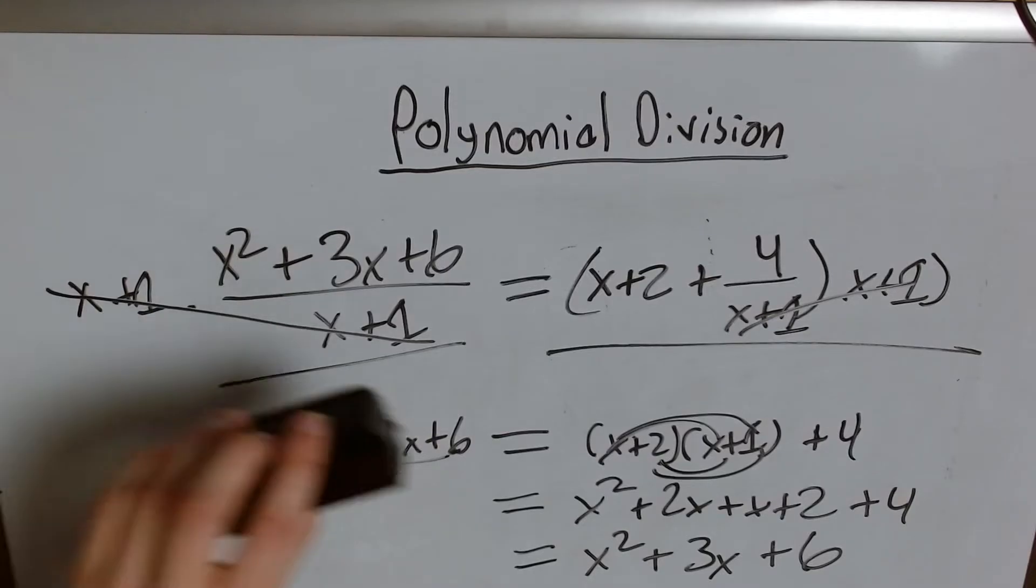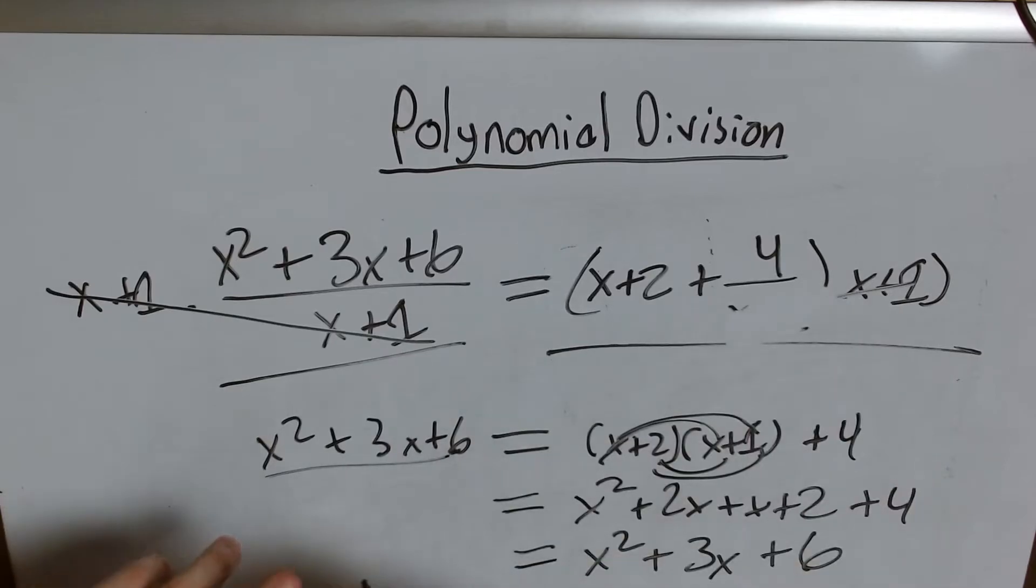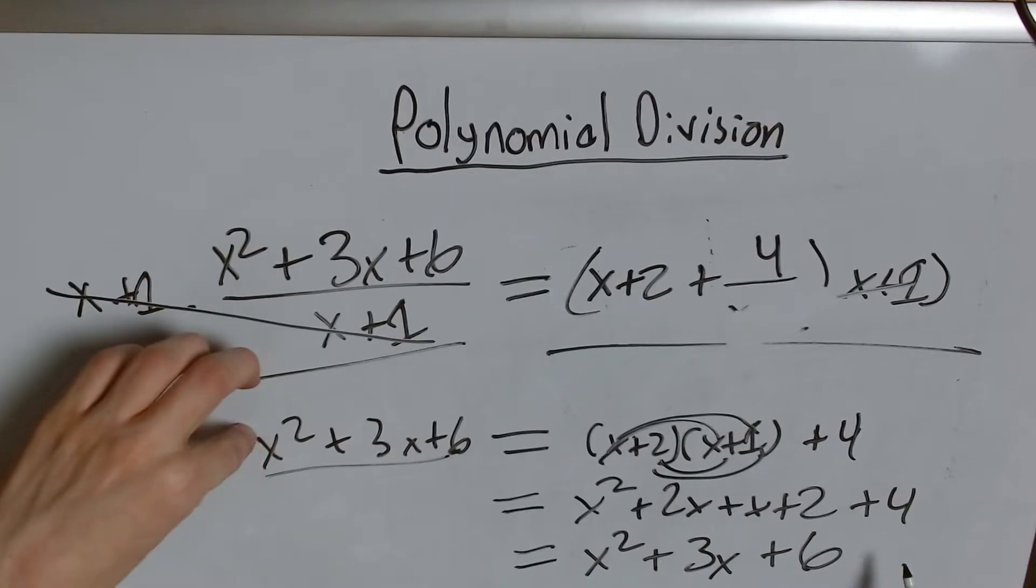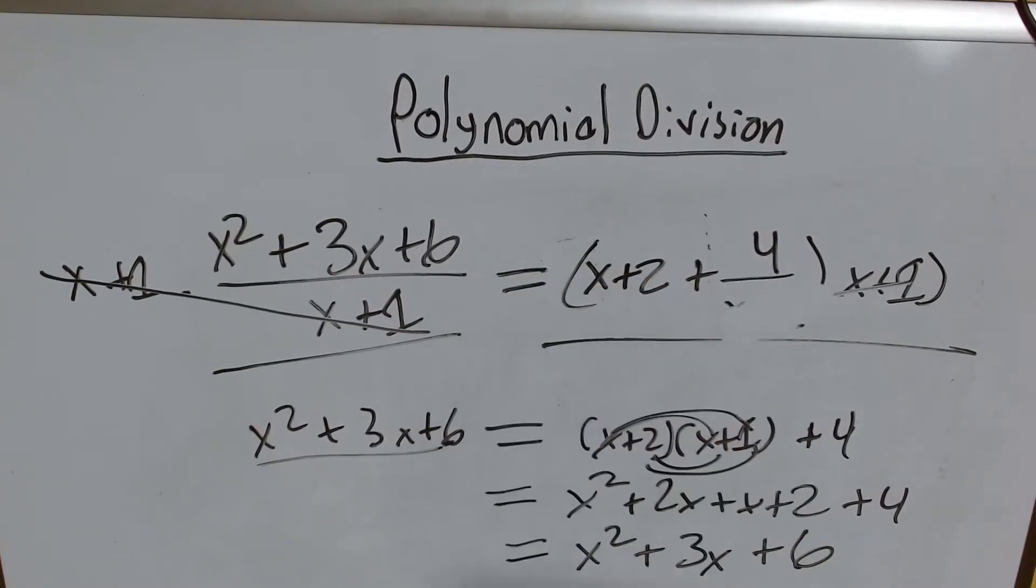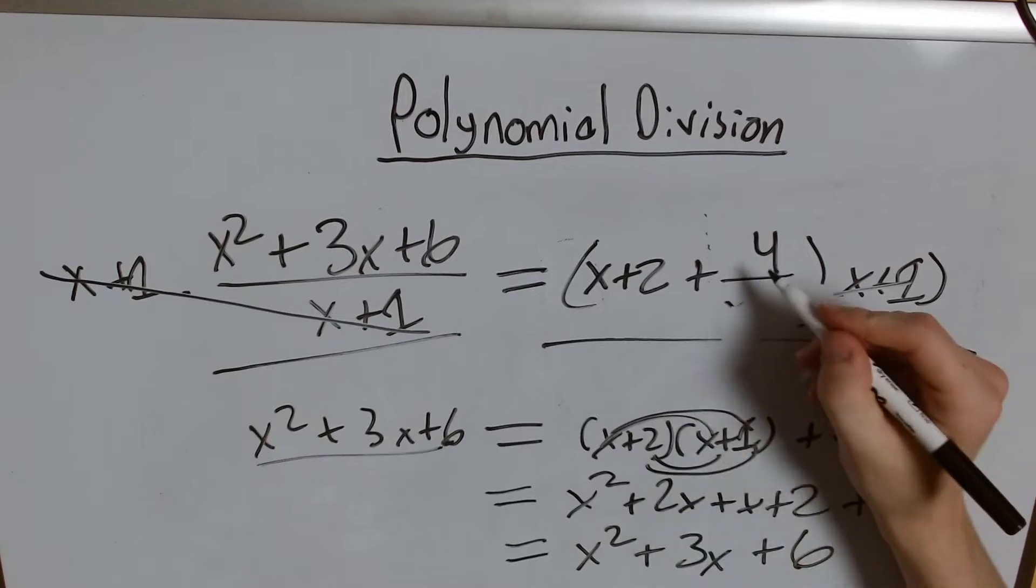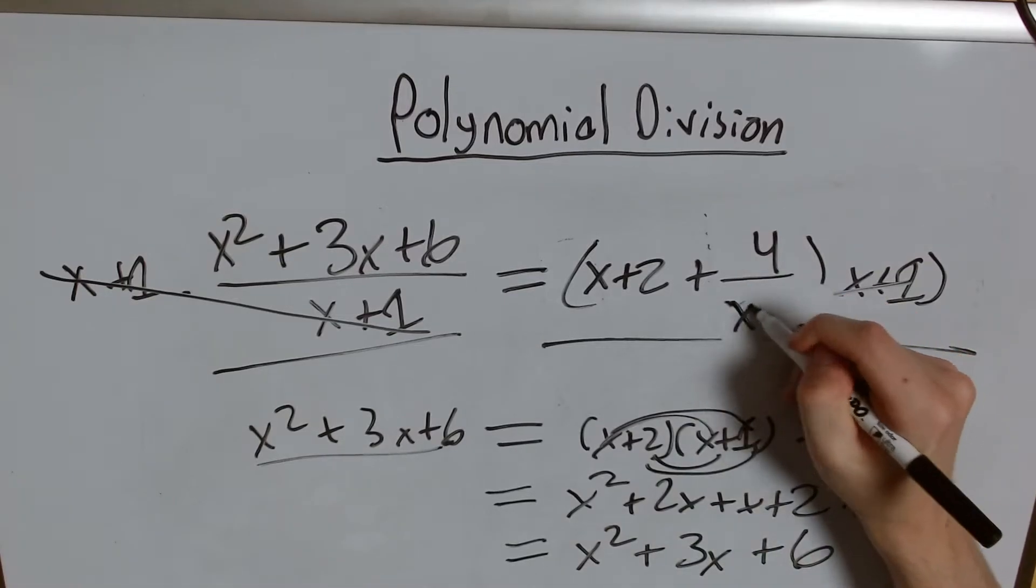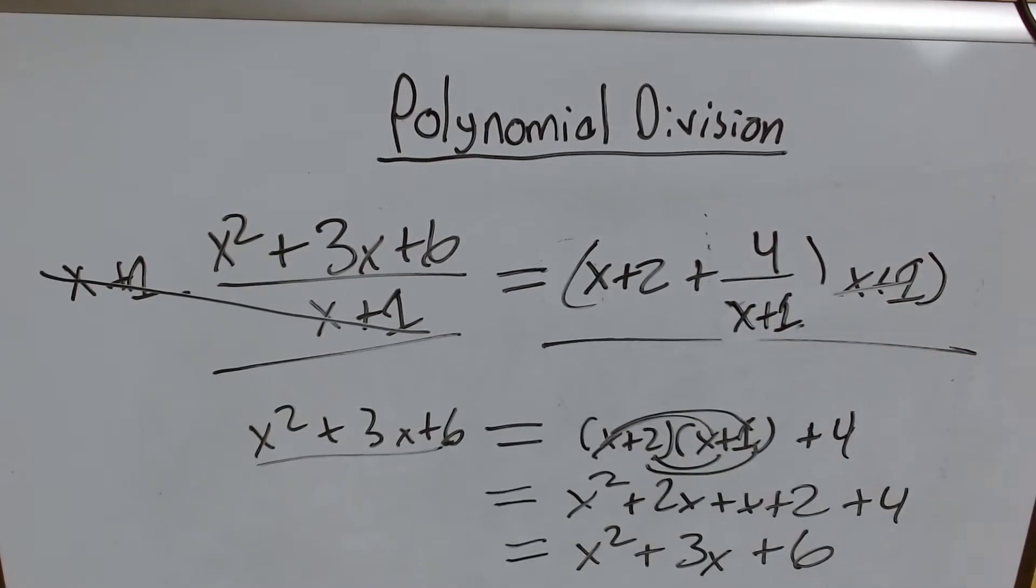If we got rid of this over x plus 1 we'd have 4 times x plus 1 which would add not only another 4x into our term but another 4 as well. And so we wouldn't get what our original x squared plus 3x plus 6 we'd get some other polynomial which means we wouldn't get what we started with. We would have violated this algebraic equation.